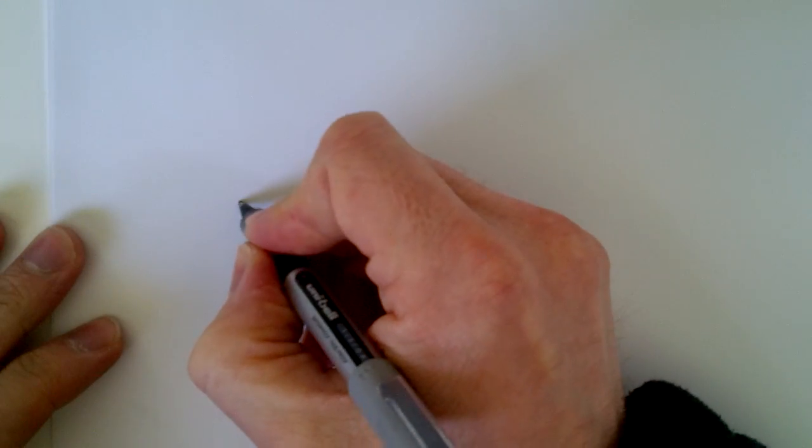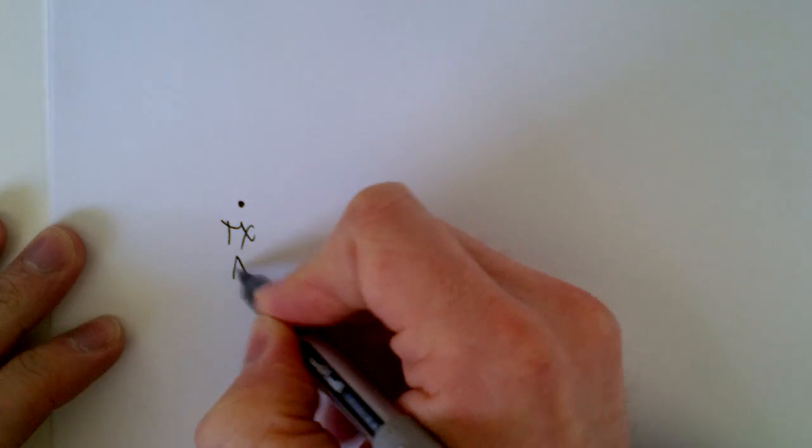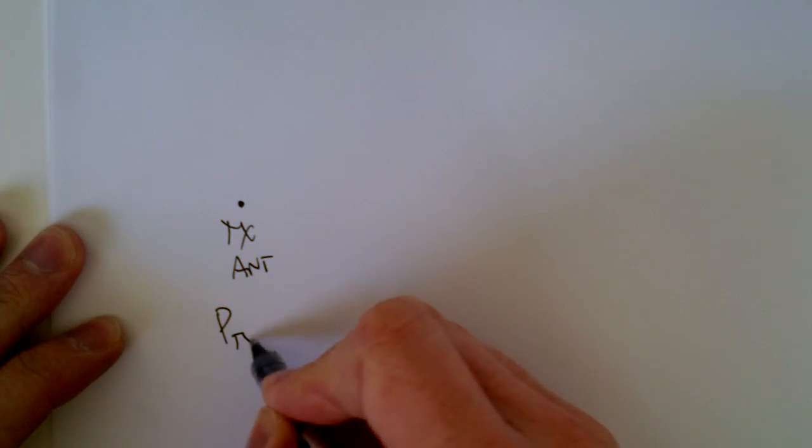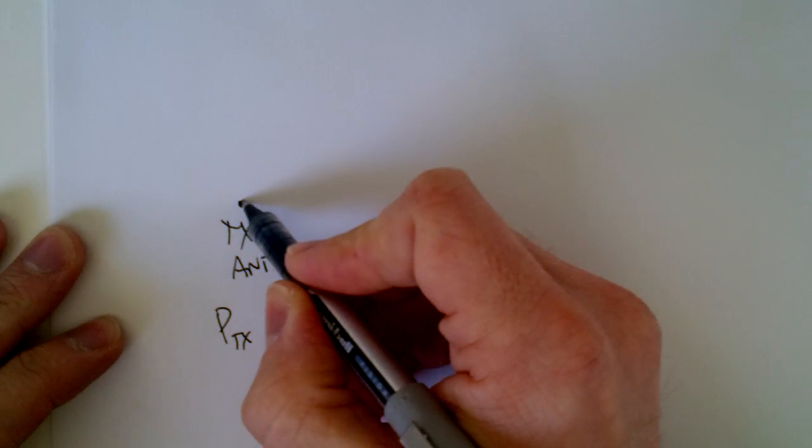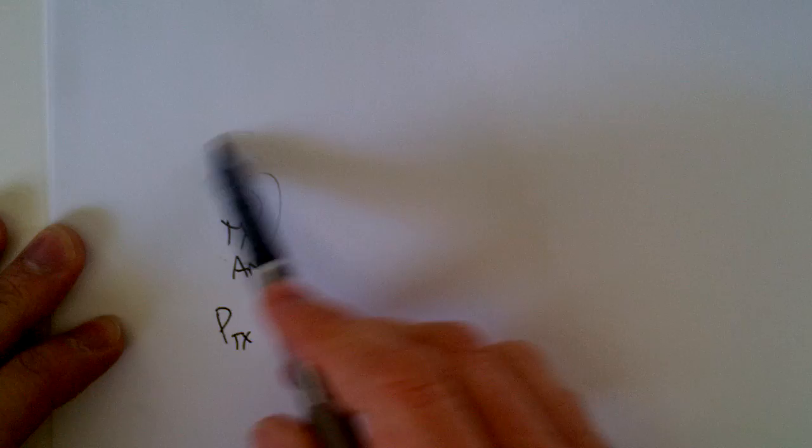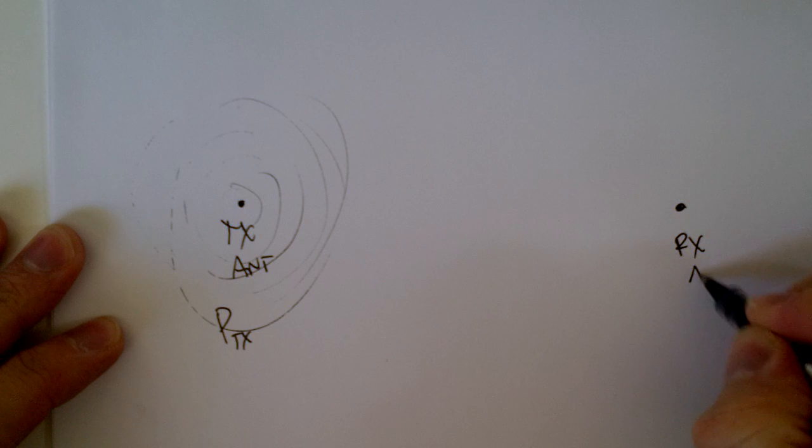Say you've got an antenna here, a transmit antenna, and then you're going to have a transmit power. If you transmit into what's called an isotropic source, that signal is going to be radiated equally in all directions. And somewhere over here, you'll have a receive antenna.